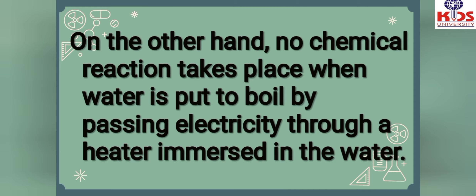On the other hand, no chemical reaction takes place when water is put to boil by passing electricity through a heater immersed in the water. When we boil water, the molecules of water do not break apart - the water remains as water. In a chemical reaction, a new substance is produced, so boiling water is not a chemical reaction. But when we pass electricity directly through water, it breaks into hydrogen and oxygen - that is a chemical reaction.